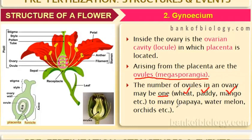On the other hand, in orchids, papaya, and watermelon, there are many seeds in a single fruit, meaning those flowers had many ovules.